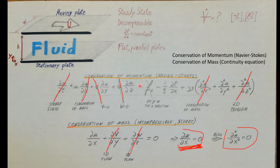The remaining terms include the body forces. The only body force we are considering is gravity, but we're in luck here because all of our flow is heading in the x-direction and gravity acts in the negative y-direction. Therefore, it does not affect the x-momentum equation, and we can go ahead and cross out that component as well.